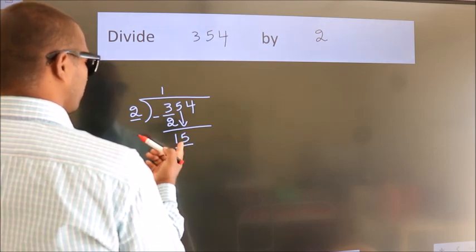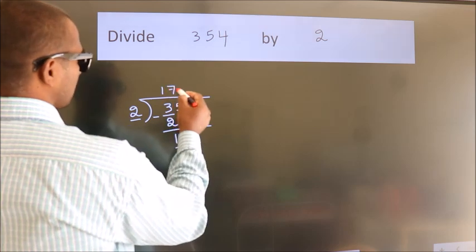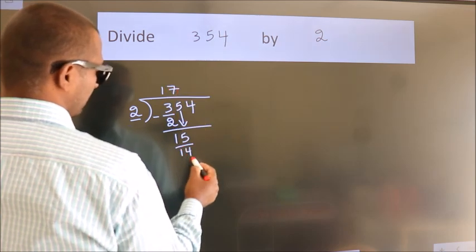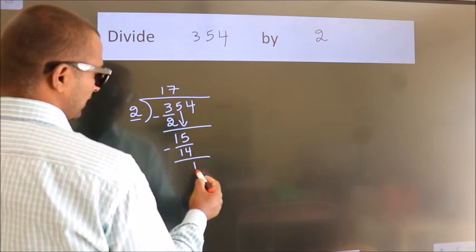A number close to 15 in 2 table is 2 7s, 14. Now, we subtract. We get 1.